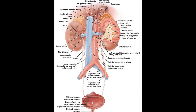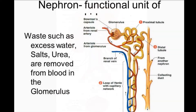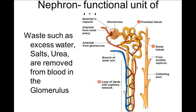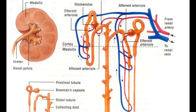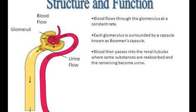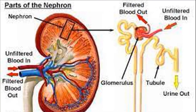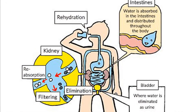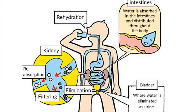Blood which enters the kidney through the renal artery contains unwanted waste substances as well as some useful substances. The nephrons remove waste substances such as excess water, mineral salts and urea from the blood and convert it into urine. They also reabsorb certain useful substances like glucose, sodium and potassium ions that are needed by the body and put them back into the blood. The blood that finally leaves the kidneys is pure, devoid of all waste, and contains the right amount of water and other useful substances.